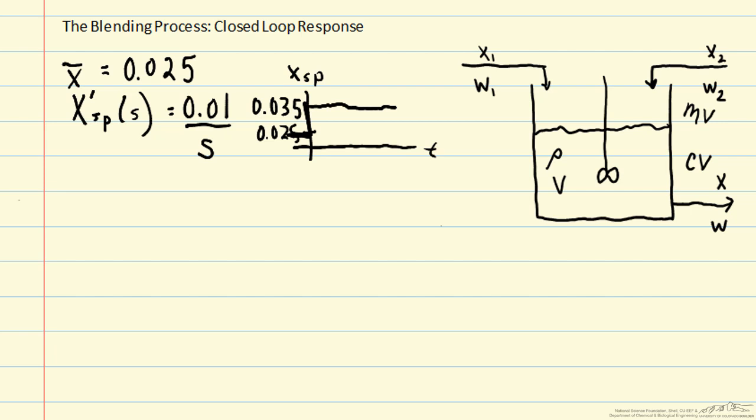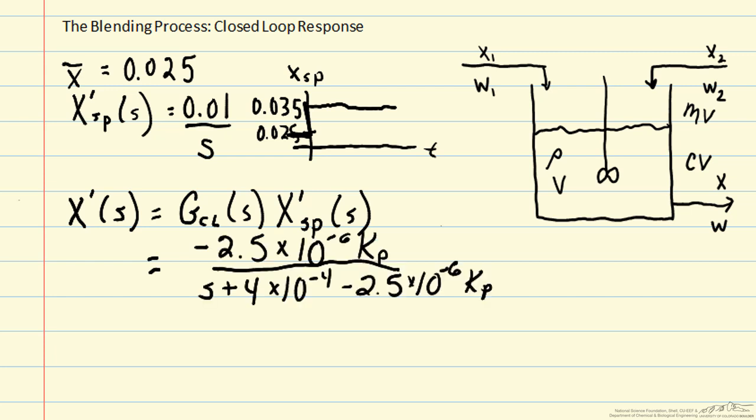Then we can use our closed loop transfer function to calculate how X will change given a change in the set point. We will use deviation variables throughout. So we can plug in our closed loop transfer function, which I calculated in the previous screencast. The Kp in this transfer function is the proportionality constant in our controller. So this first term here is G closed loop, and then the second term is our change in set point.